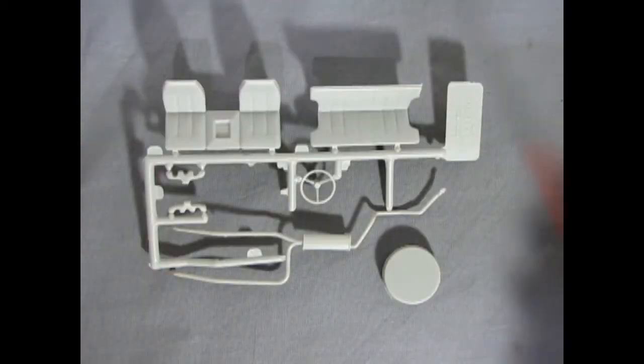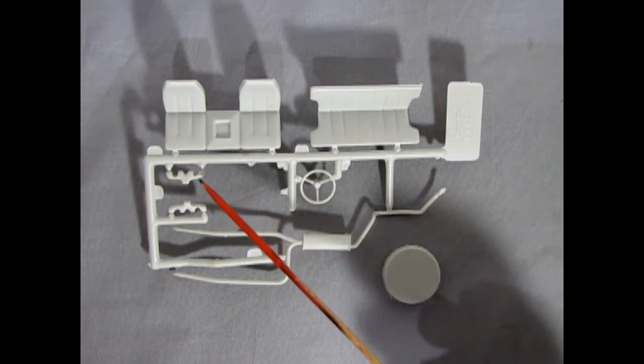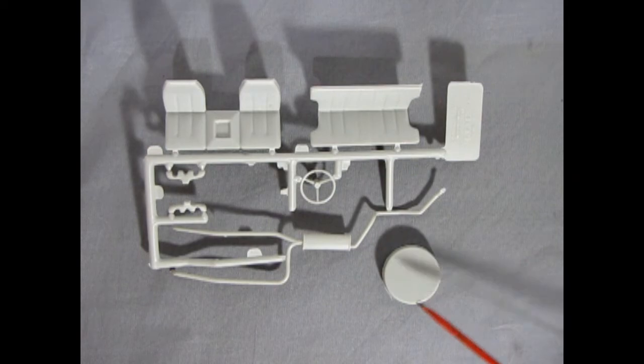Our next parts tree includes the front bucket seats with the center console as well as our rear bench seat, steering wheel, exhaust headers and our exhaust pipe with the single muffler and then off the sprue is our spare tire cover.